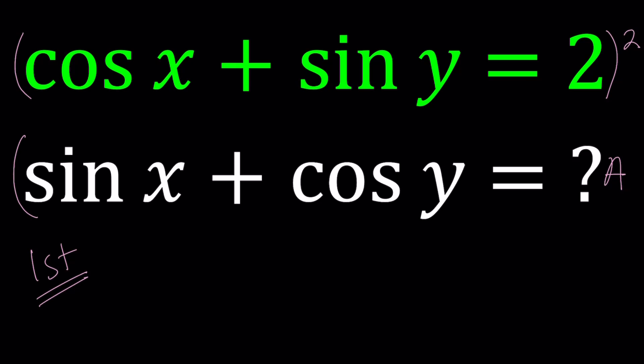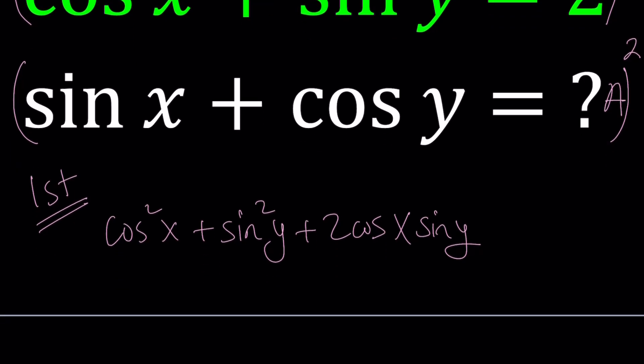And when we do, we're going to get the following. Cosine squared x plus sine squared y plus 2 cosine x sine y. That's the formula for A plus B quantity squared, right? Equals 4. Awesome.